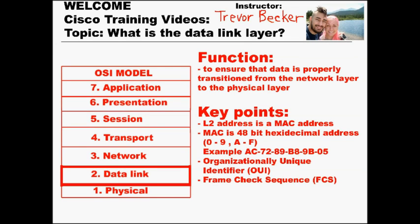The data link layer is layer 2 on the OSI model and the TCP/IP updated model. The data link layer's responsibility is to ensure the data is properly transitioned from the network layer, which is layer 3, to the physical layer, which is layer 1. Switches are the dominant device at this layer, and they can usually switch up to a few million frames a second. A frame is the PDU, or protocol data unit, at this layer. That's a pretty mind-blowing speed — a few million a second. That's how fast switches process.